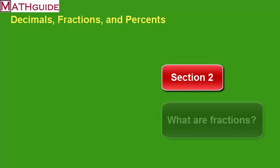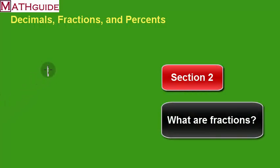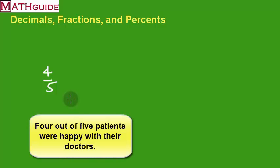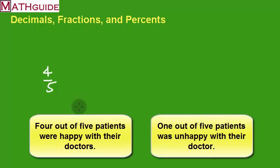So let's say we take the fraction four-fifths. And let's say it's associated with a real problem or a real situation, like four out of five patients were happy with their doctors. So that would mean, yeah, that's a lot of patients out of five. That means if four out of five were happy with their doctor, one out of five people were not.